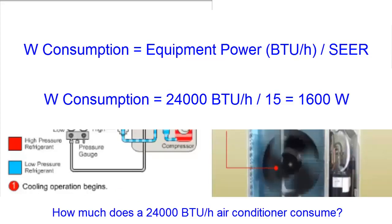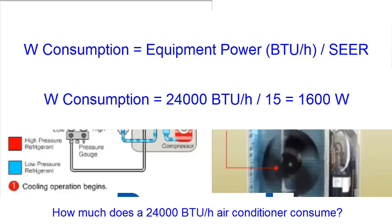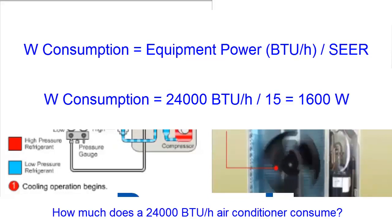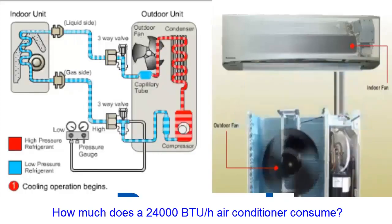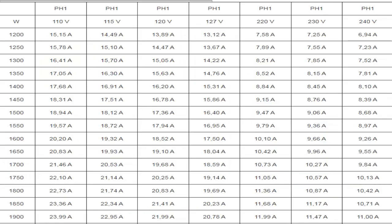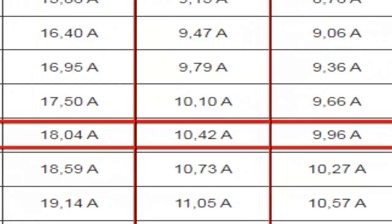For example, for a 24,000 BTUs per hour air conditioner with a SEER of 15, an average consumption of 1,600 watts is expected. With the electrical power consumed by the equipment, you can look up the electrical current value in the amperage table based on the voltage and type of power supply, whether it is single phase or three phase.